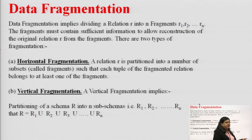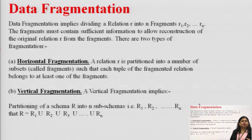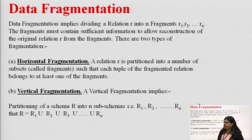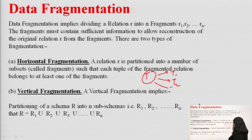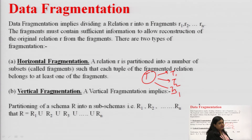There are two types of fragmentation: horizontal fragmentation and vertical fragmentation. Horizontal fragmentation is done through the tuples — a relation r is partitioned into subsets called fragments such that each tuple belongs to at least one of the fragments. If we have a tuple set T broken into T1, T2, and T3, every tuple that was in the master set should be available in at least one of these three subsets. This is horizontal fragmentation.